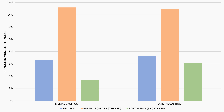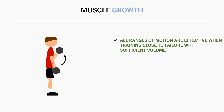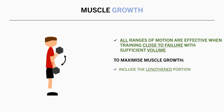So overall, all ranges of motion seem to be effective for building muscle, provided that you are training close to failure with sufficient volume. However, to maximize muscle growth, it seems that we want to at least include the lengthened portion of the range of motion in the exercise. This might be via standard full range of motion, or via partial reps performed in the lengthened range.